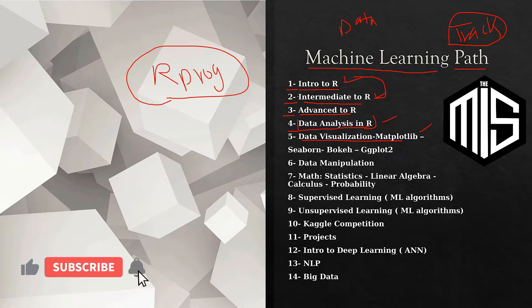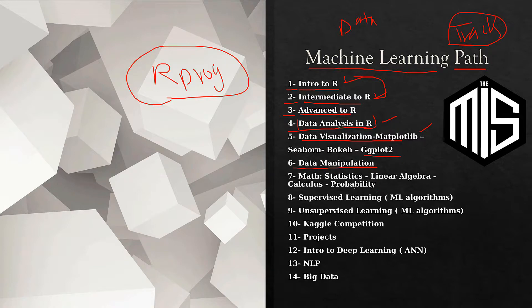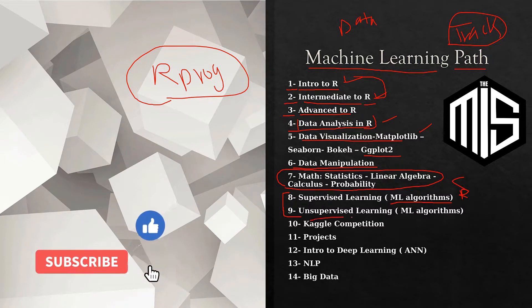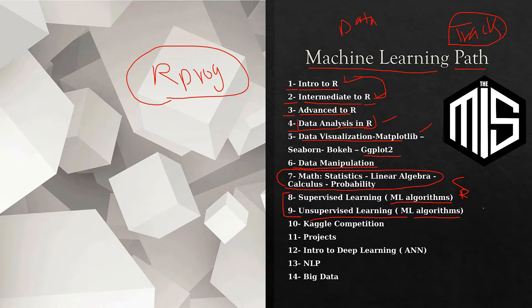We should learn data manipulation — packages like dplyr — and data visualization with ggplot2. Since we're learning machine learning, the math should be covered: statistics, linear algebra, calculus, and probability — both theoretically and in R. Then we get into core machine learning: supervised learning covering classification and regression, and unsupervised learning covering clustering, anomaly detection, PCA, and k-means, all in R.